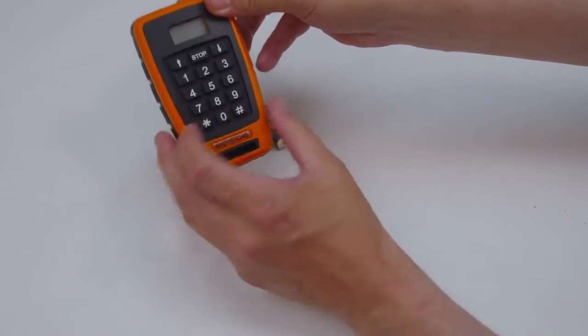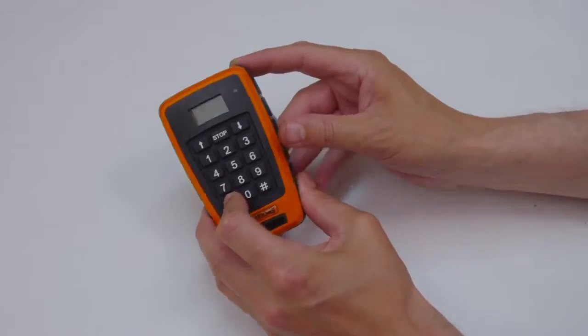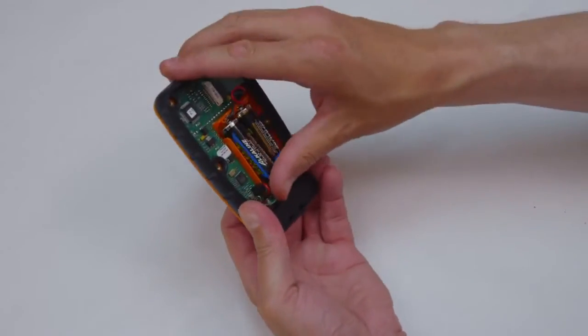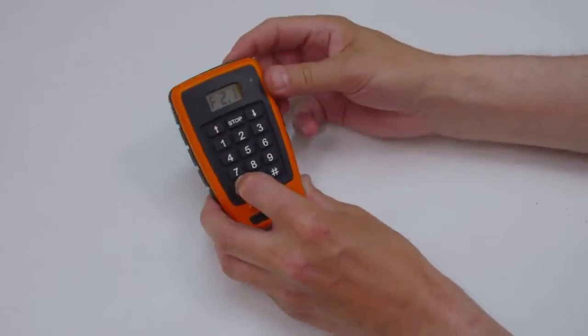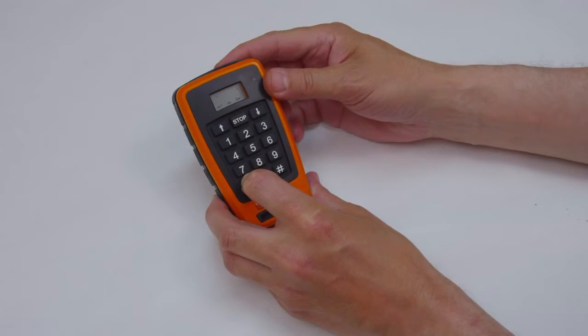Press and hold the bottom left button on the transmitter while inserting the battery. Continue pressing the button until the text AID is displayed in the transmitter display.